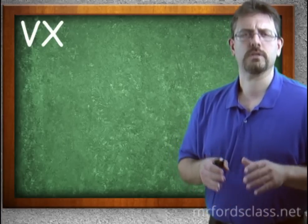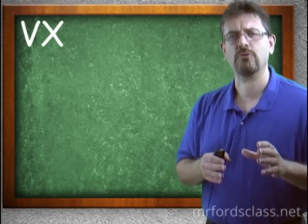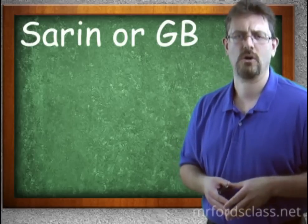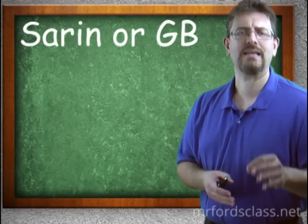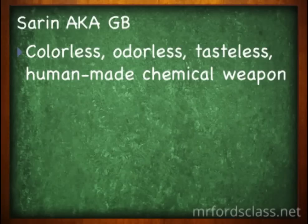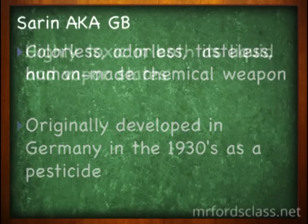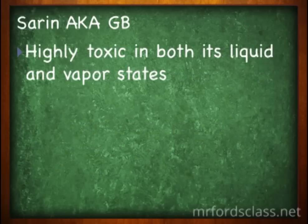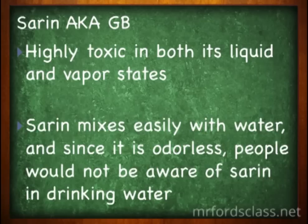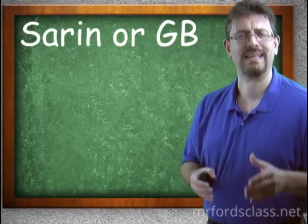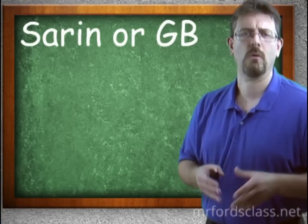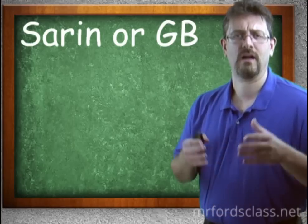No conversation about nerve agents can be complete without talking about sarin, otherwise known as GB. Sarin is a colorless, odorless, tasteless, human-made chemical weapon, originally developed in Germany in the 1930s as a pesticide. It is very toxic in both liquid and vapor states. It mixes very easily with water, and since it's odorless and tasteless, people could drink it without even being aware they're being poisoned. It can also be used to contaminate food, and the person would not know they are being impacted.